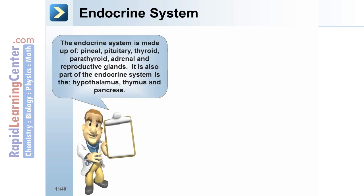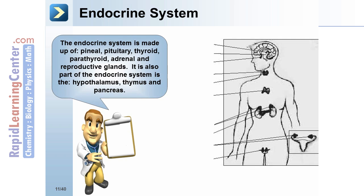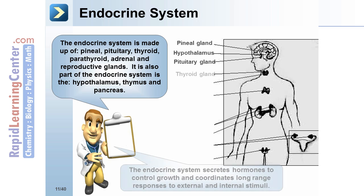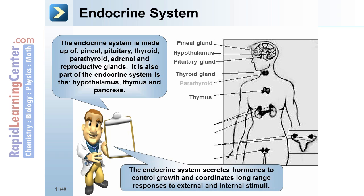Endocrine system: made up of the pineal, pituitary, thyroid, parathyroid, adrenal, and reproductive glands, as well as the hypothalamus, thymus, and pancreas. The endocrine system secretes hormones to control growth and coordinates long-range responses to external and internal stimuli.